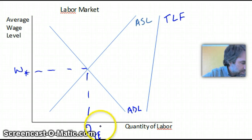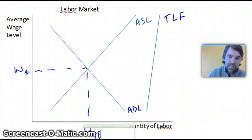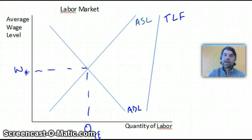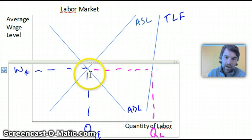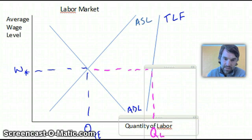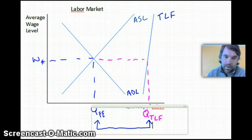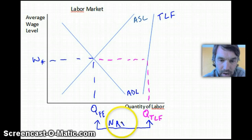That quantity of labor is QFE — Quantity of Full Employment. At that equilibrium point, labor is fully employed. Now remember, full employment doesn't mean 100% employment. It means the only remaining unemployment is structural, frictional, or seasonal. The distance between QFE and the TLF curve represents our quantity of total labor, and that distance between the two is our Natural Rate of Unemployment.